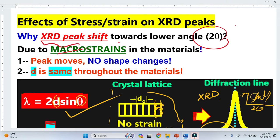When there is a macrostrain in a material, the X-ray peak will shift toward lower.